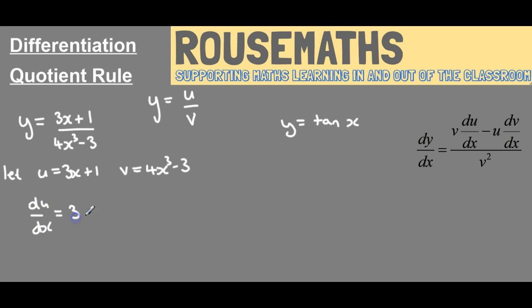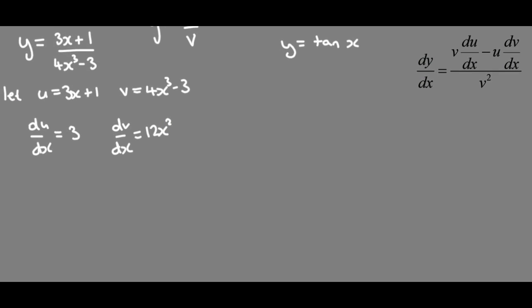So du/dx will be 3, dv/dx will be 12x squared and then we have to put all those bits back together to find dy/dx.